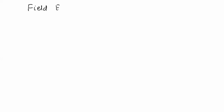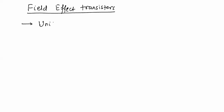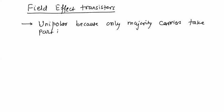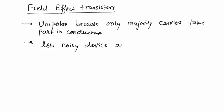In this chapter we will discuss about field effect transistors. Field effect transistors are called unipolar because only majority carriers take part in conduction. These are less noisy devices as compared to BJT due to the absence of minority charge carriers.